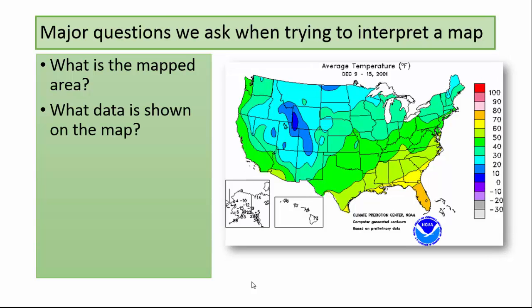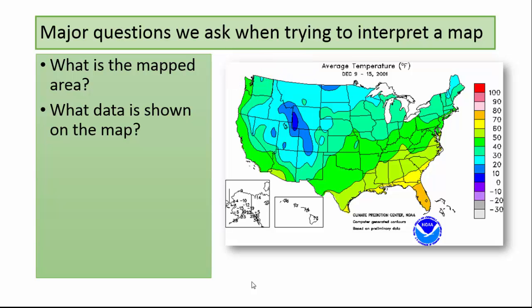Next, let's consider what data is shown on the map. To figure this one out, the best place to start is the map title. In this case we are looking at a map titled Average Temperature in Degrees Fahrenheit, December 9th to 15th, 2001. So the data being depicted is surface temperature averaged over a week in December of 2001.